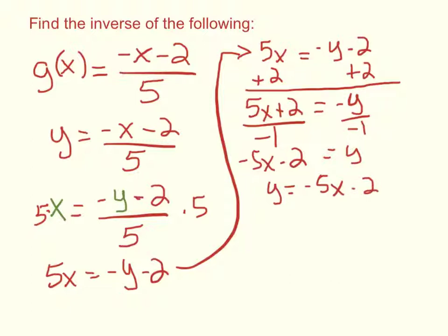And if I rewrite that in function notation, that is going to be g inverse. So that's our inverse. g inverse of x equals negative 5x minus 2.